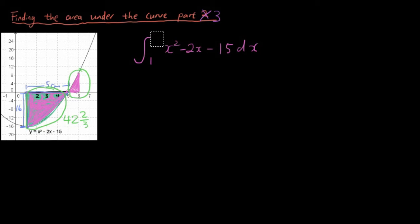Sorry guys, just showing you that it's wrong before we show you the right one. So we're going to find the integral from 1 to 5, which we've already done previously, plus the integral from 5 to 6 of x² - 2x - 15 dx.